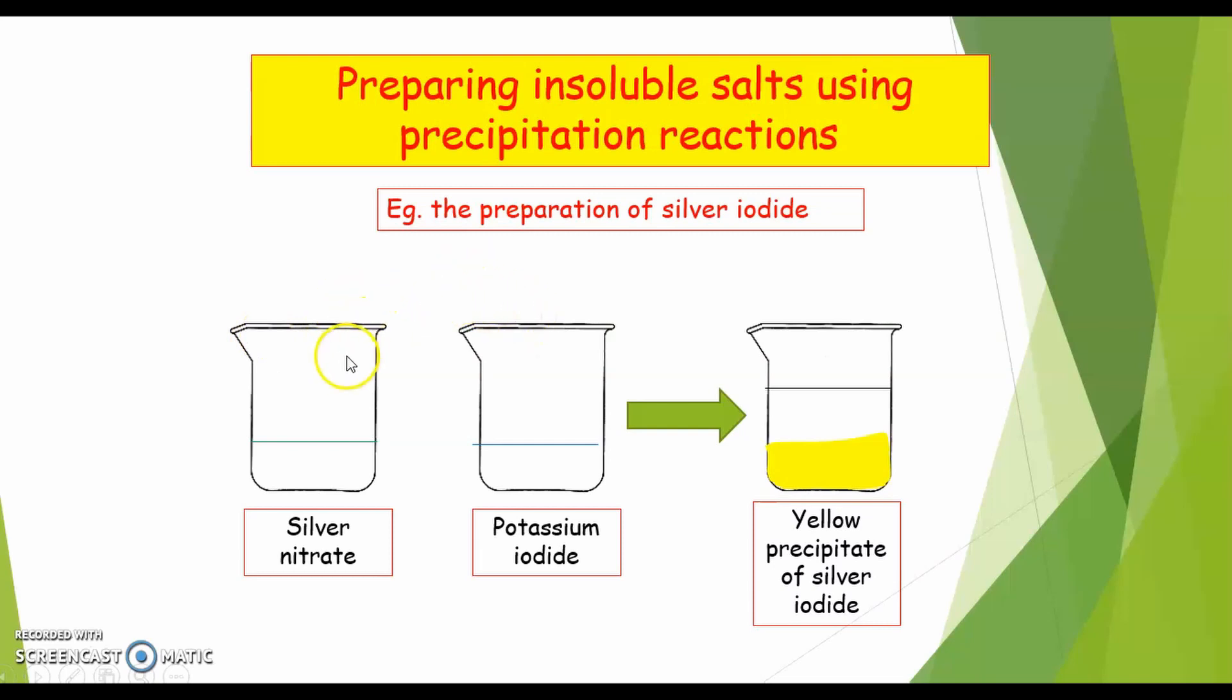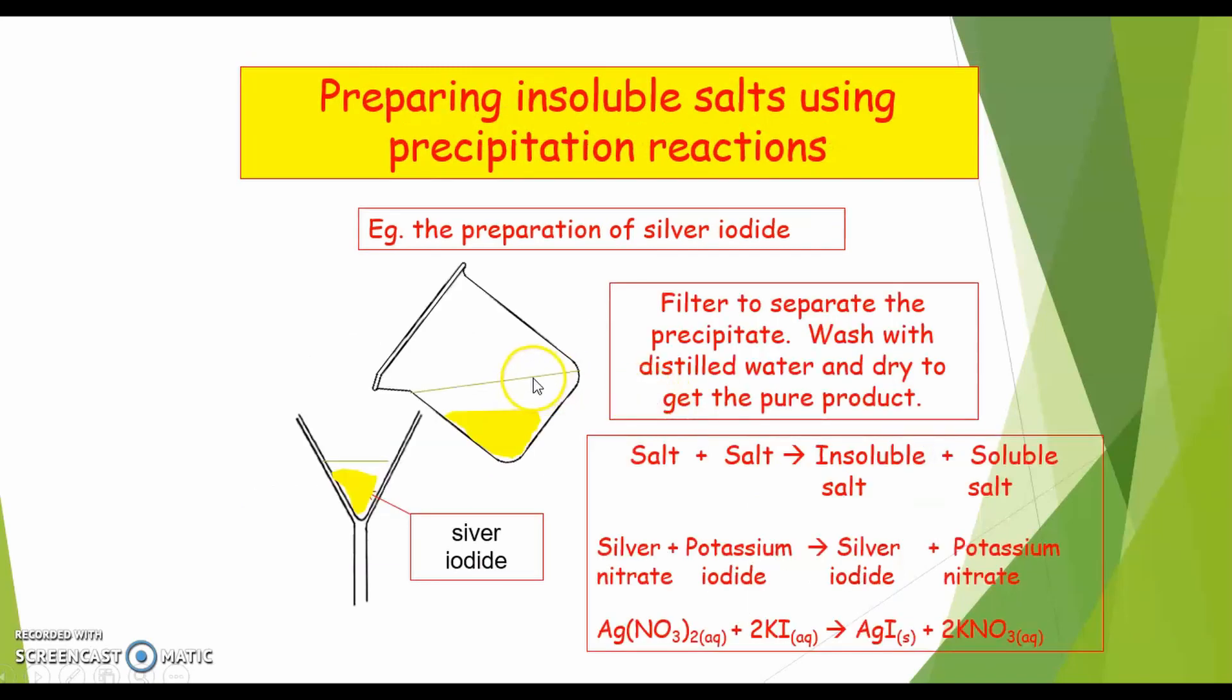When potassium iodide is mixed with silver nitrate, instantaneously you obtain two layers of mixture. The first layer will be the soluble salt potassium nitrate, while the precipitate will be the insoluble salt silver iodide. Next, we filter to separate the precipitate.